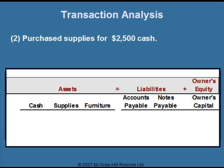Another example: the company purchases supplies for $2,500 cash. We identify the accounts that are changing: supplies and cash. Cash is an asset, so we write $2,500 under the cash column. When a company purchases supplies for cash, the company's cash is going down, so we put brackets around the $2,500 to indicate it's decreasing. The other account changing is supplies, so we put $2,500 under the supplies column — the company has $2,500 more supplies than before, meaning that account is increasing.